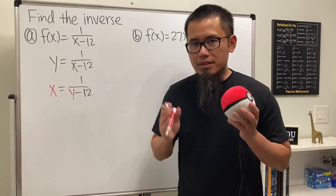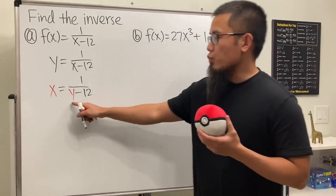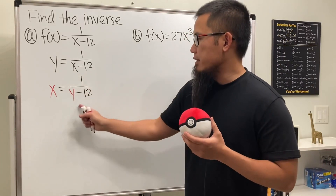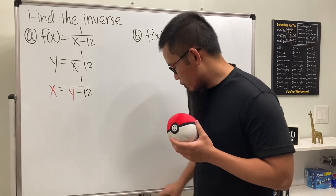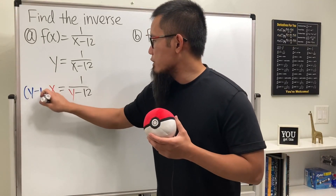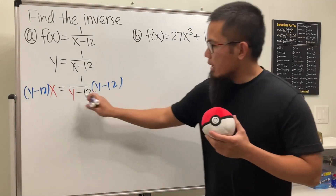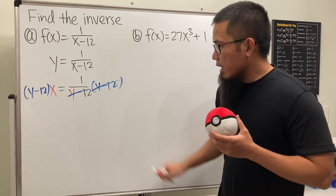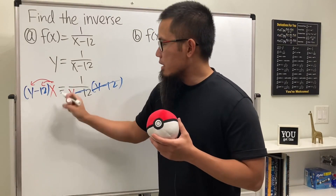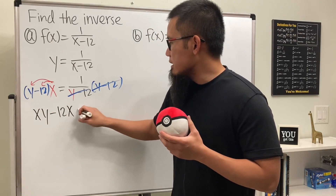Step three — this is the step that takes the most amount of time — we will solve for this new y. Here we have a rational function, so let's multiply the denominators on both sides. We multiply by y minus 12 on both sides, so this and that cancel. On the left-hand side, we distribute and get xy minus 12x, and that equals 1.